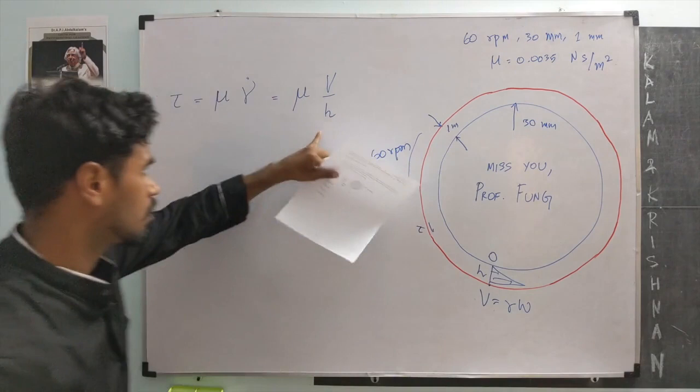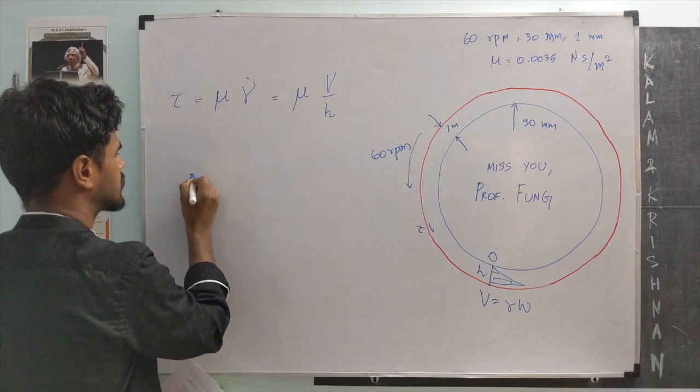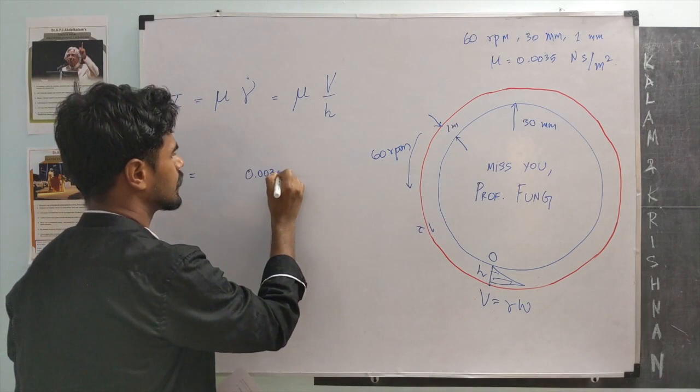And now, just need to substitute for all the values and find what the shear stress is. So, mu has 0.035 given Newton's per meter square.